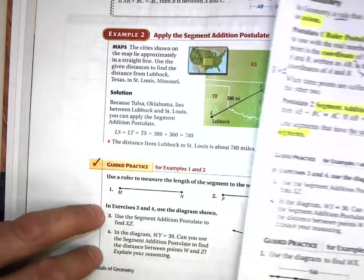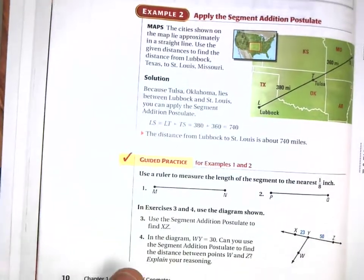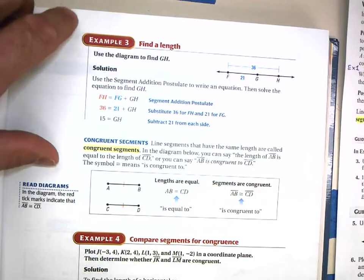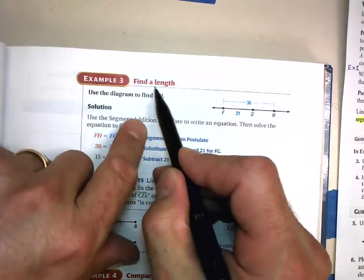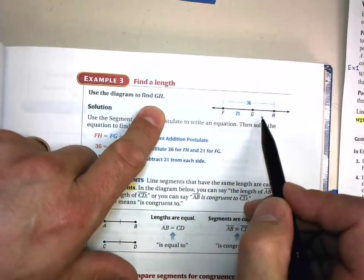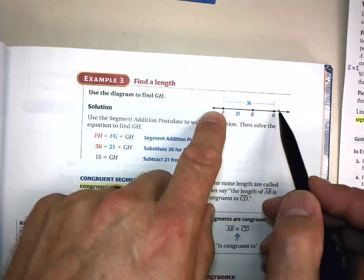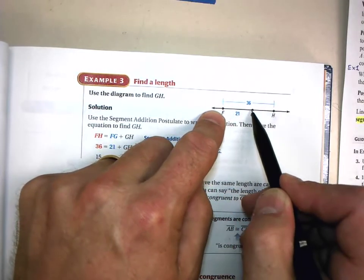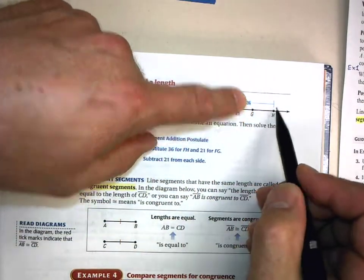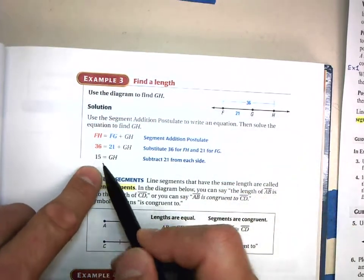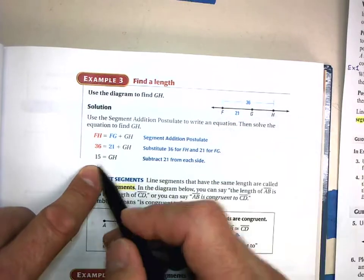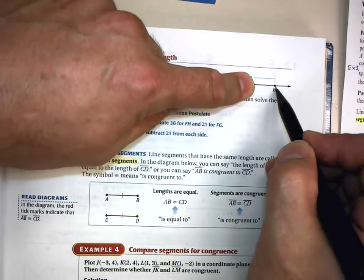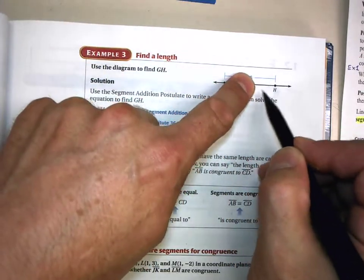Let me do example 3 for you. Use the diagram to find GH. Remember that's the distance of segment GH. GH is right here, and this whole thing is 36. I have the whole thing, 36, and then I take away 21. I've got the whole thing of 36, take away 21, and I'm left with the length of GH. So what is 36 minus 21? That's 15. See how that works? Take the whole thing, take away this other part, you're left with what's remaining.